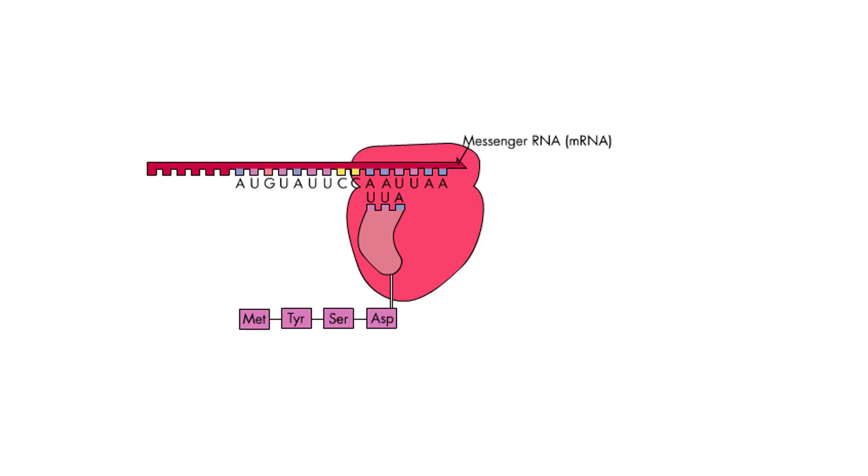Elongation usually adds hundreds of amino acids before a protein is fully translated. But for simplicity, we only show the first four amino acids of AT3 here.